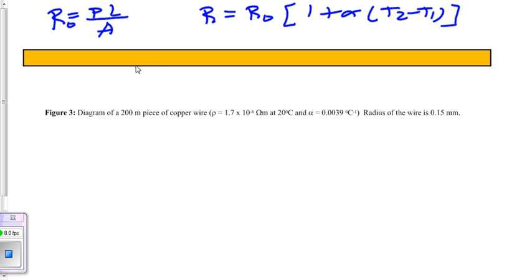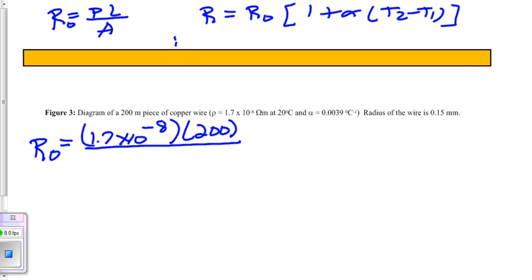So let's find the resistance at basically room temperature of 25 degrees Celsius. So R naught is going to equal our rho value of 1.7 times 10 to the minus 8. We'll multiply that by the length of the wire, 200 meters, and divided by the cross-sectional area. Now if you take a cross-sectional area, that of course will be a circle for a wire.